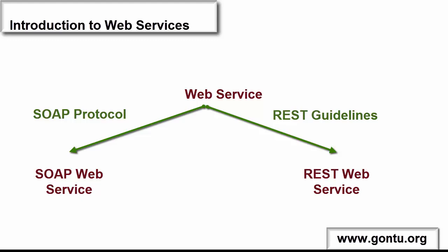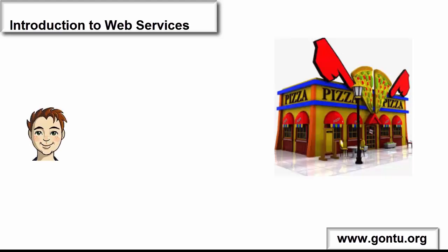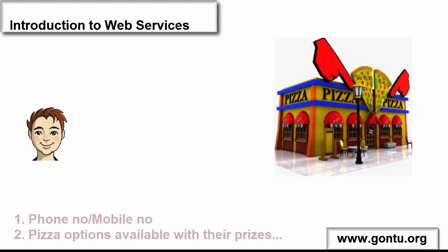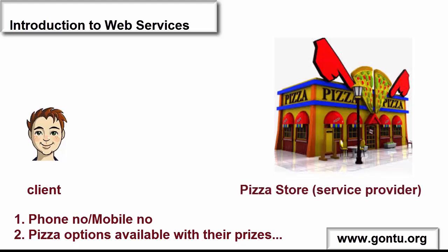Let's first understand the working of a SOAP-based web service application with the help of a real-life analogy, and later in the next tutorial we'll talk about REST-based web service concepts in detail. In the real world, the basic information a person needs for ordering a pizza at home: firstly, the phone number of the pizza store; secondly, all pizza options available with their prices. Here, the person ordering the pizza is the client, and the pizza store is the service provider.